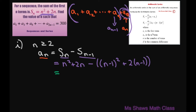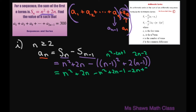Let's simplify all this. We get n squared plus 2n, minus n squared minus 2n plus 1, minus 2n plus 2. The n squared terms cancel, the 2n terms cancel, and this whole thing equals 2n plus 1.